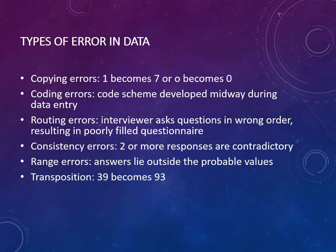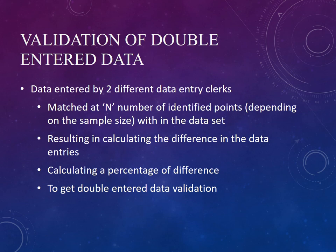Transposition errors occur when, for example, instead of 39, a person enters 93. To validate double entry of data, when data is entered by two different data entry clerks, we match them at a certain number of identified points (labeled N), which depends on the sample size. We then calculate the differences in data entries at those points and compute a percentage of difference. This percentage tells us how accurate the data is.